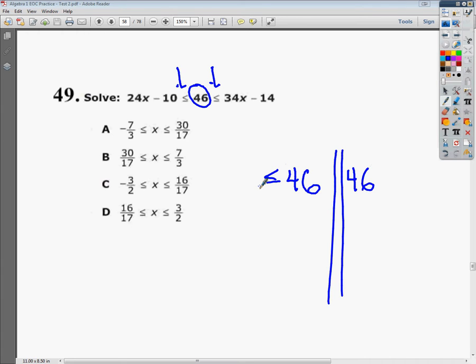Now, the left side is the cat, so I just bring down 24x minus 10 here, and it's less than or equal to 46. I just basically keep it all the same. And on the other side, 46 is less than or equal to 34x minus 14.